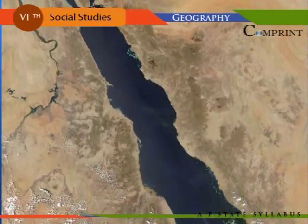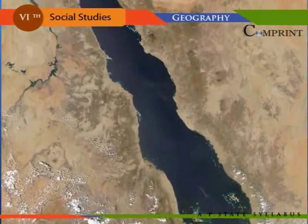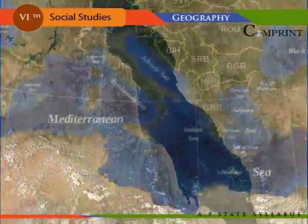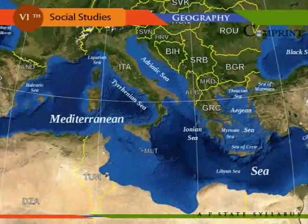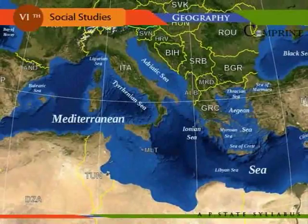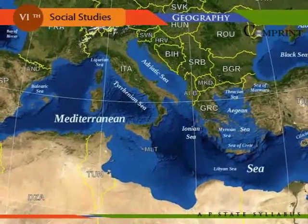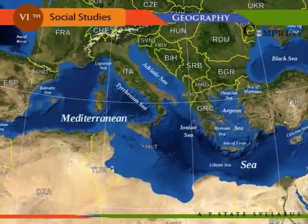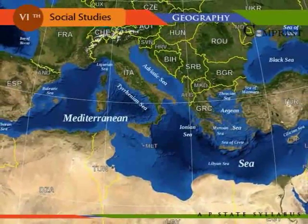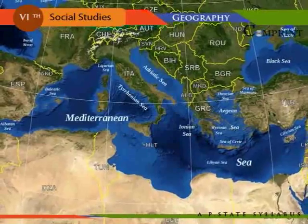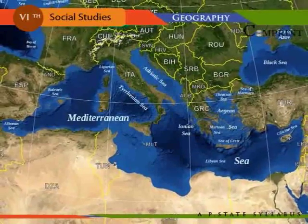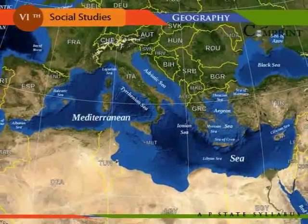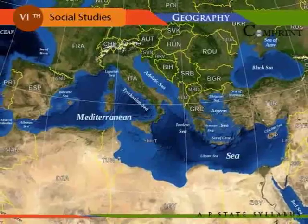The Red Sea, the Gulf of Aden, and the Indian Ocean are on the northeast and separate Africa from Asia. The continent is bounded by the Atlantic Ocean on the west, the Mediterranean Sea in the north, and the Southern Ocean in the south.